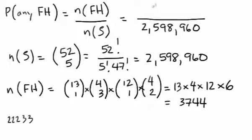We put that number in our numerator. So the probability of getting any full house hand is 3744 divided by 2,598,960.